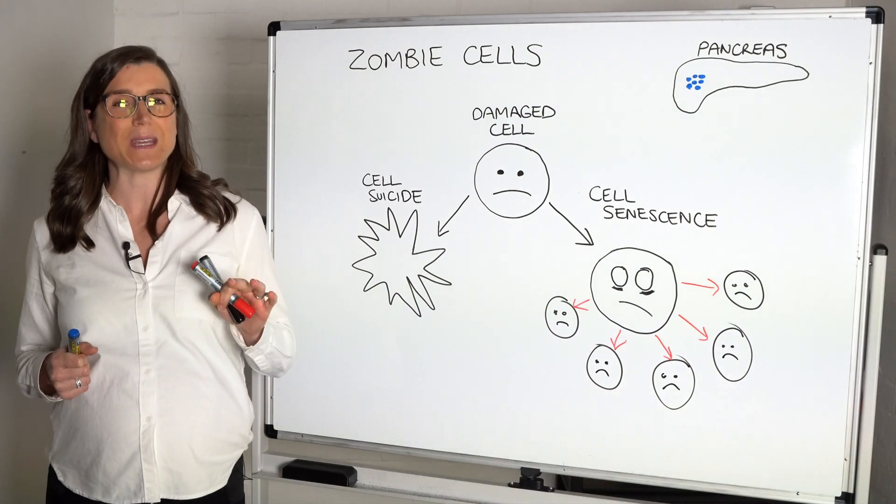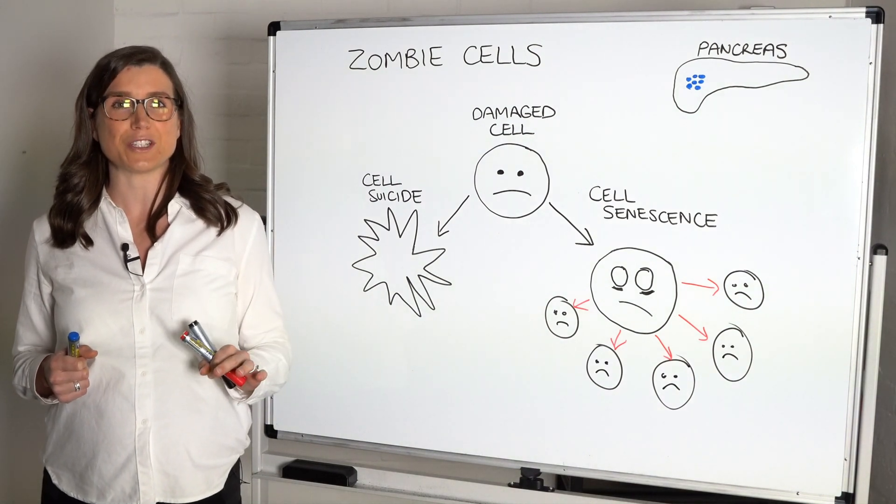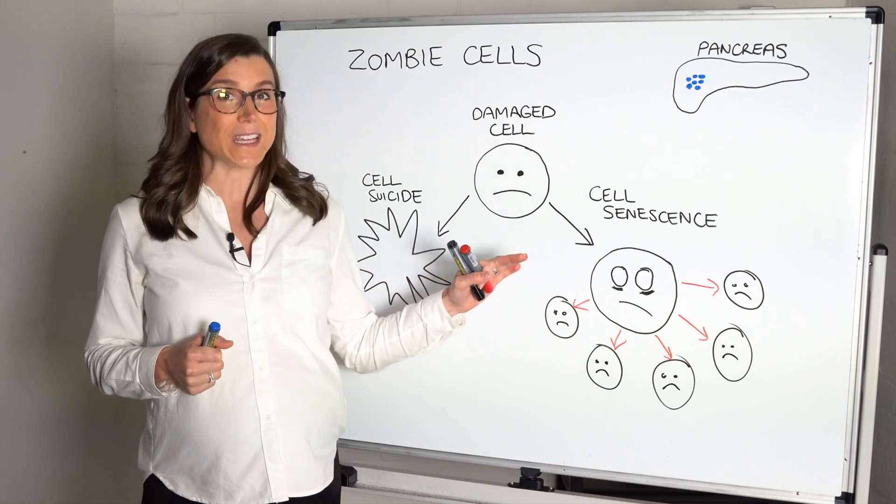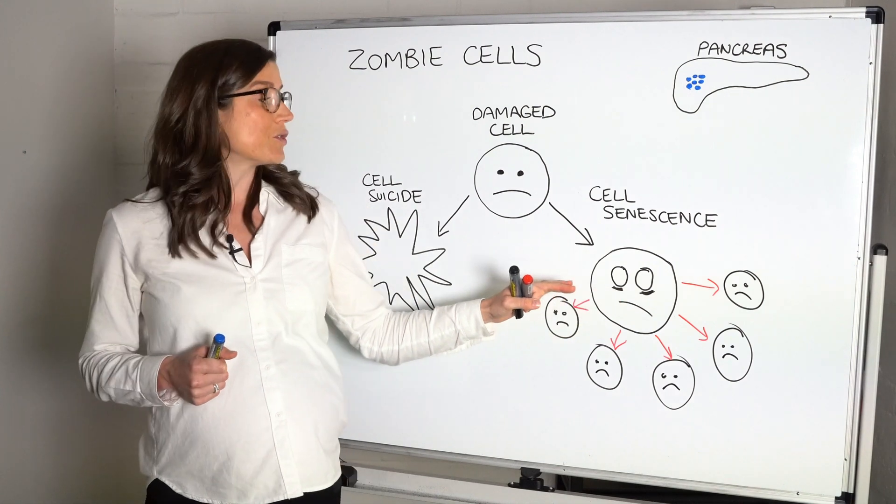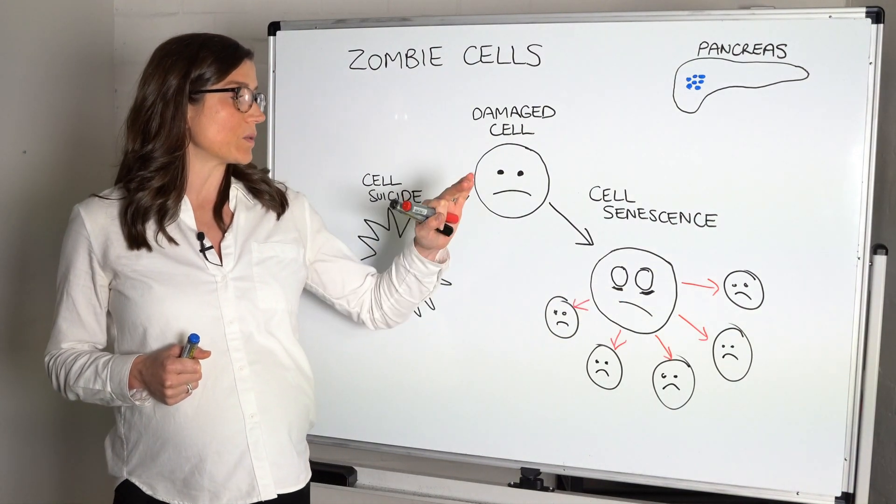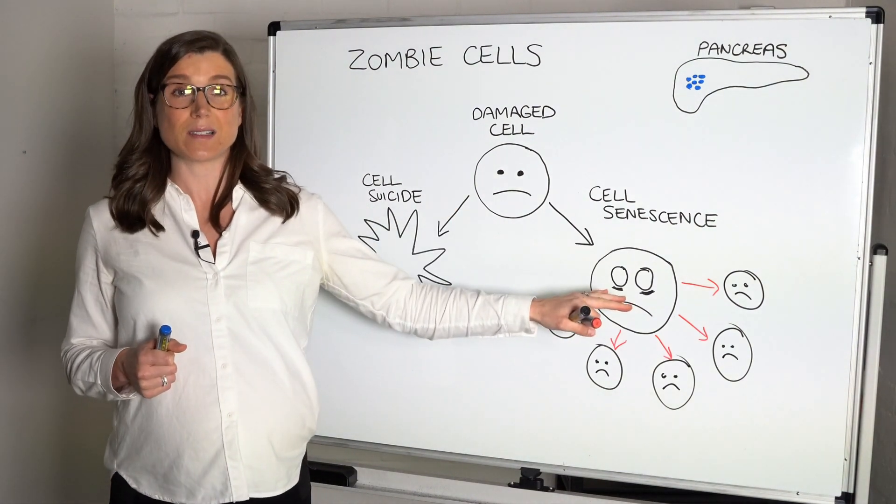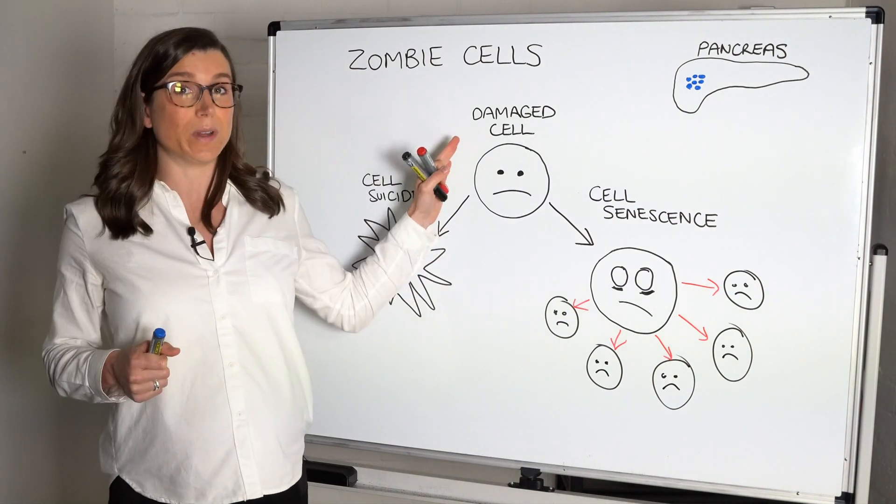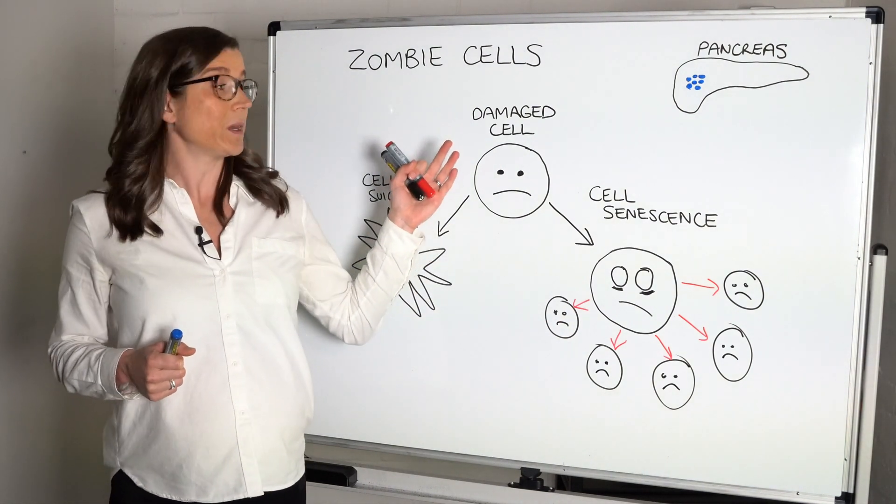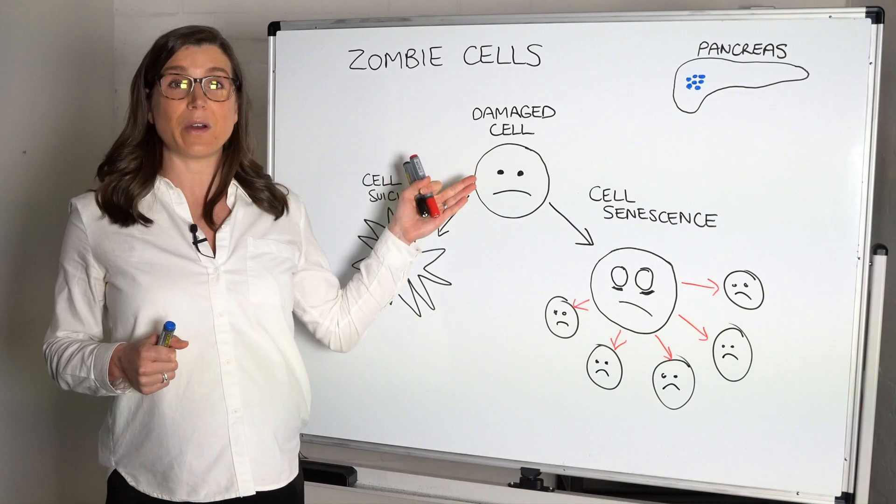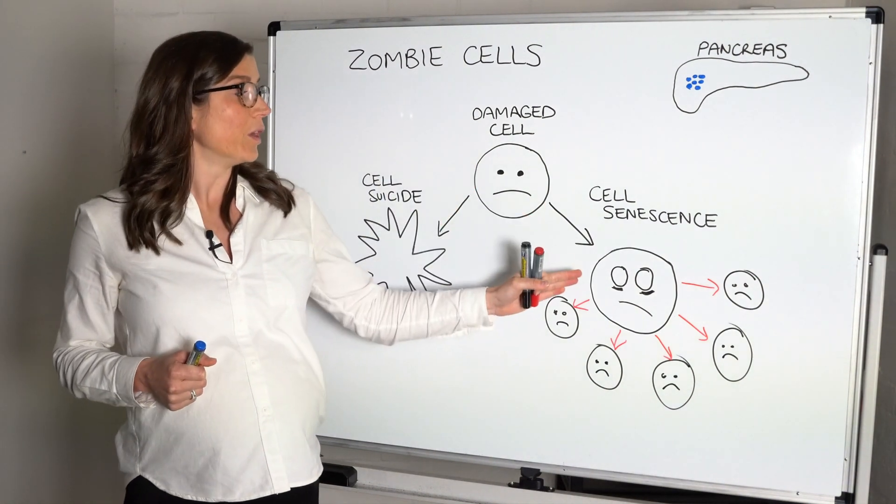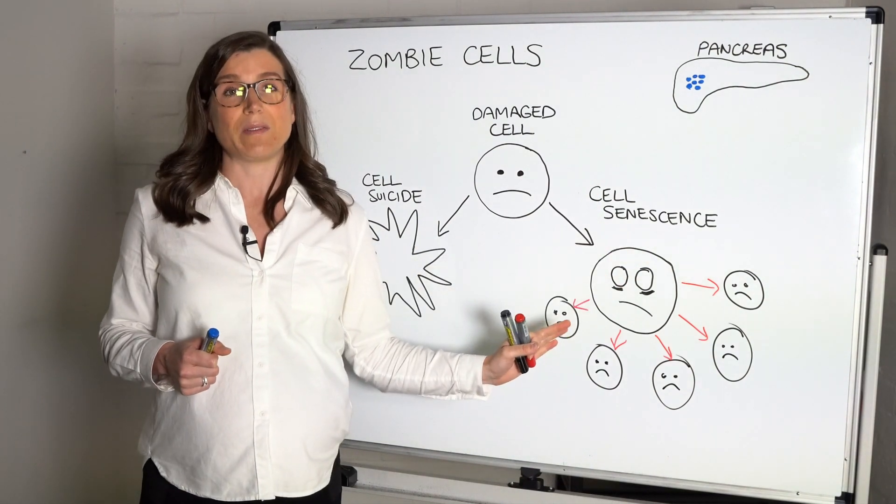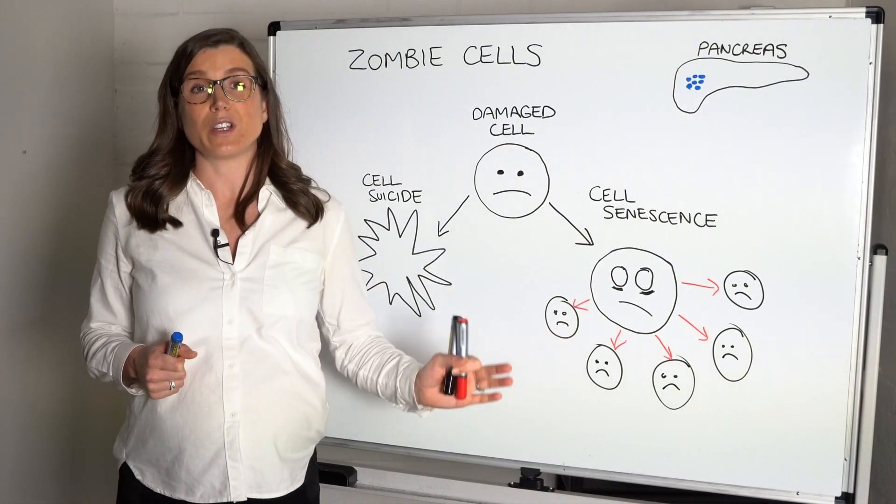However, we have to always be careful when we start messing with biology because we can't forget that this is a protective mechanism to protect us from cancer. So while we don't want too many senescent cells—I mean ideally we don't want the cell to be damaged in the first place because that cell used to be a healthy cell—we also ideally don't want too many of these senescent cells because they are going to contribute to aging.